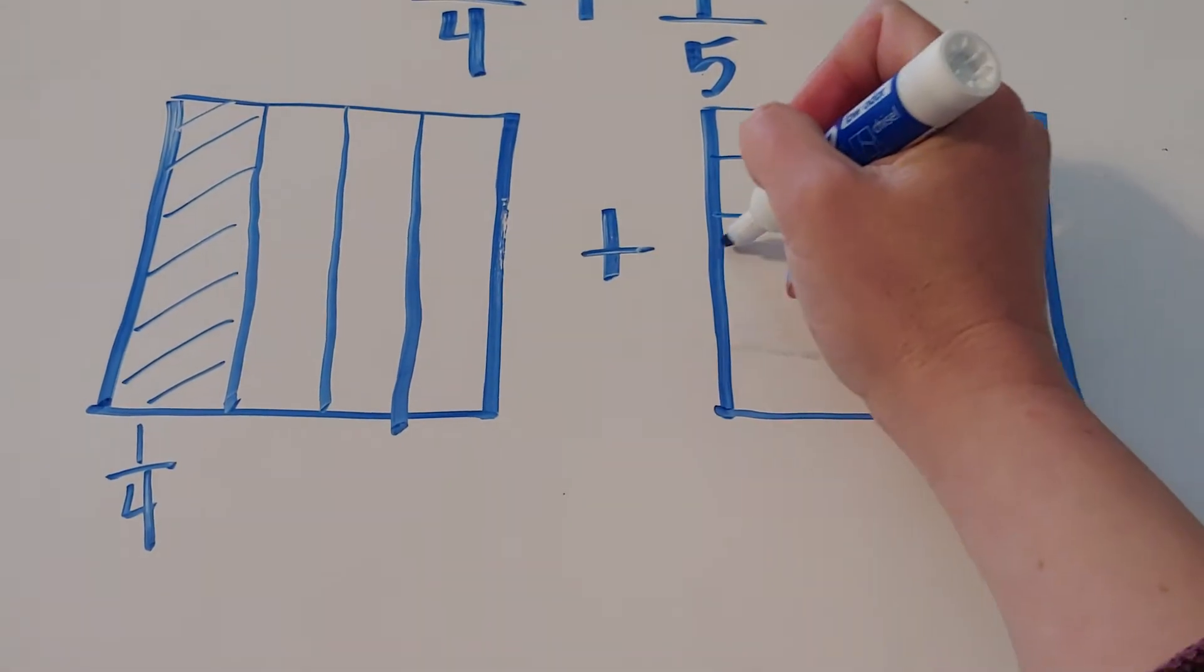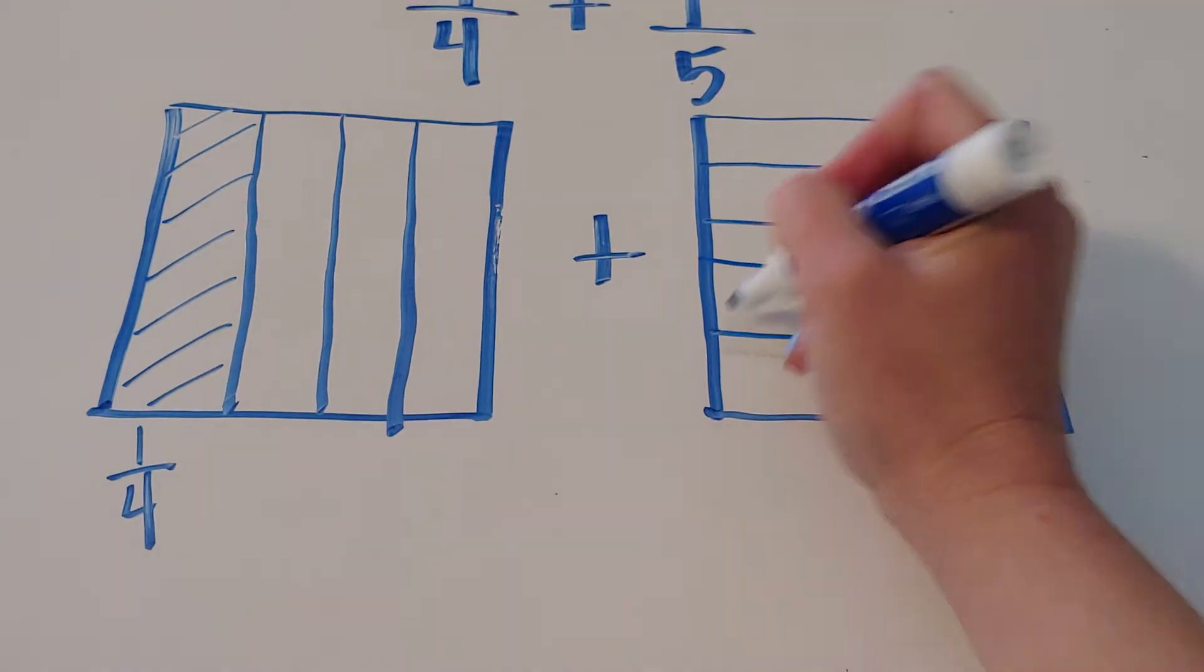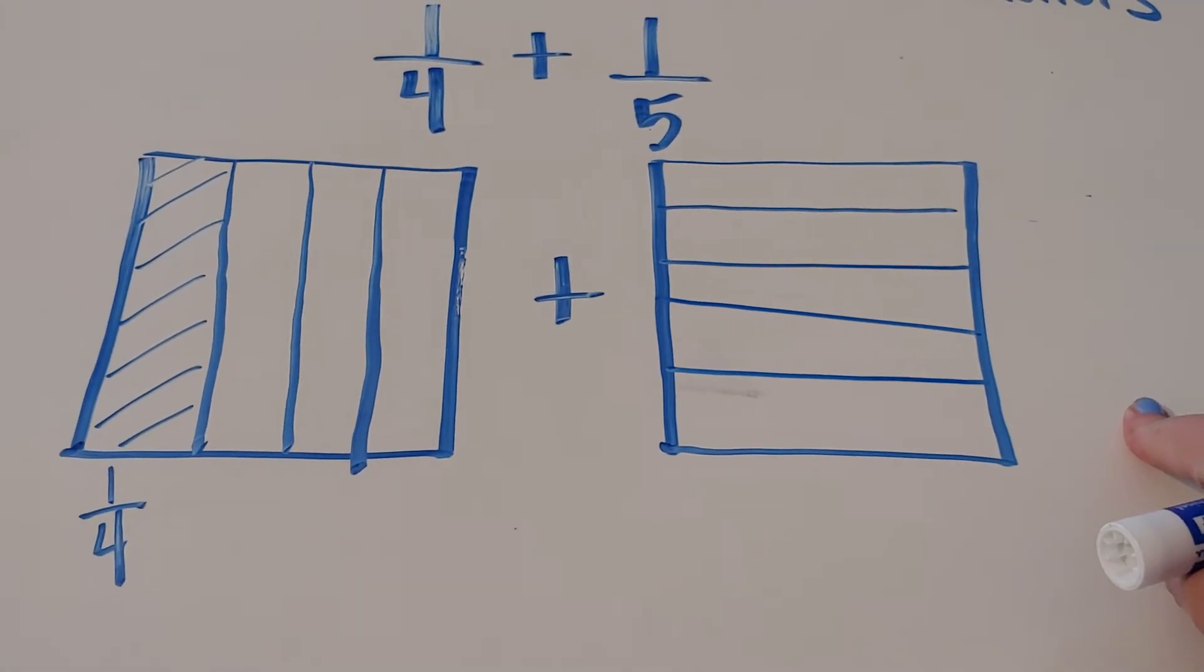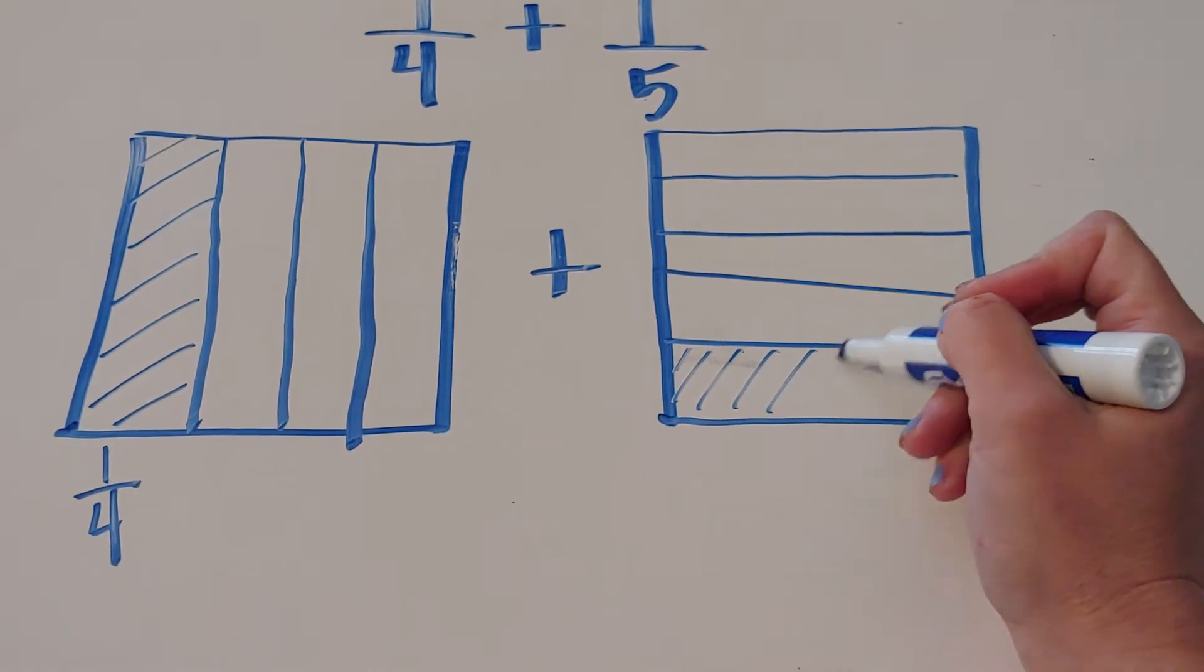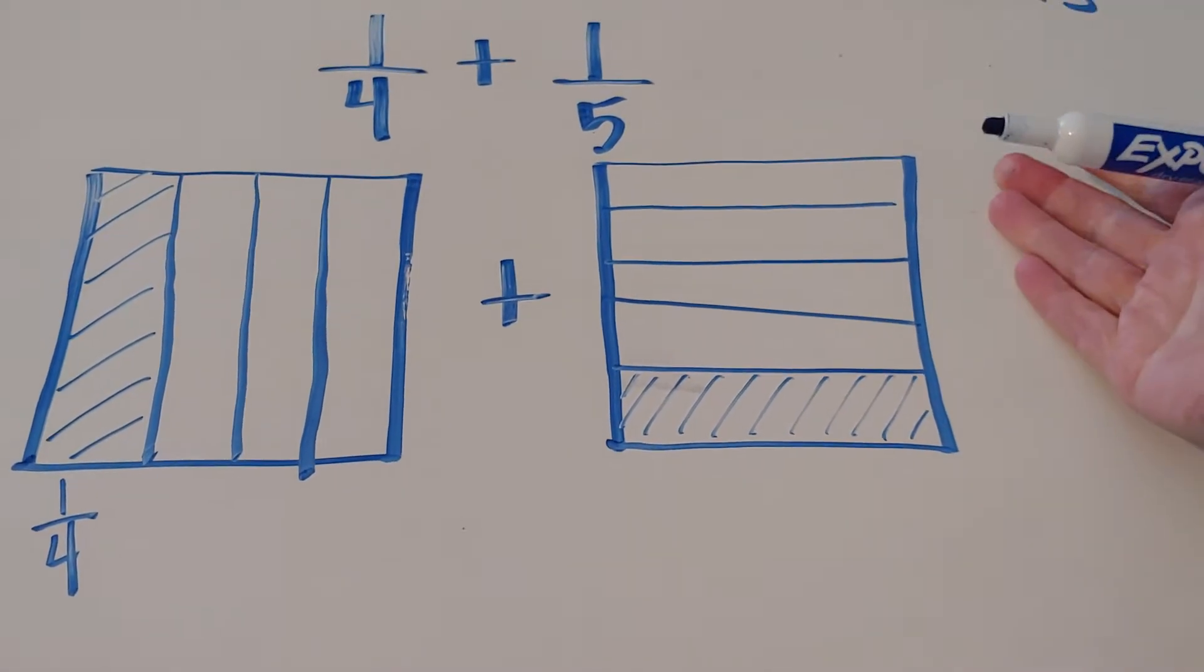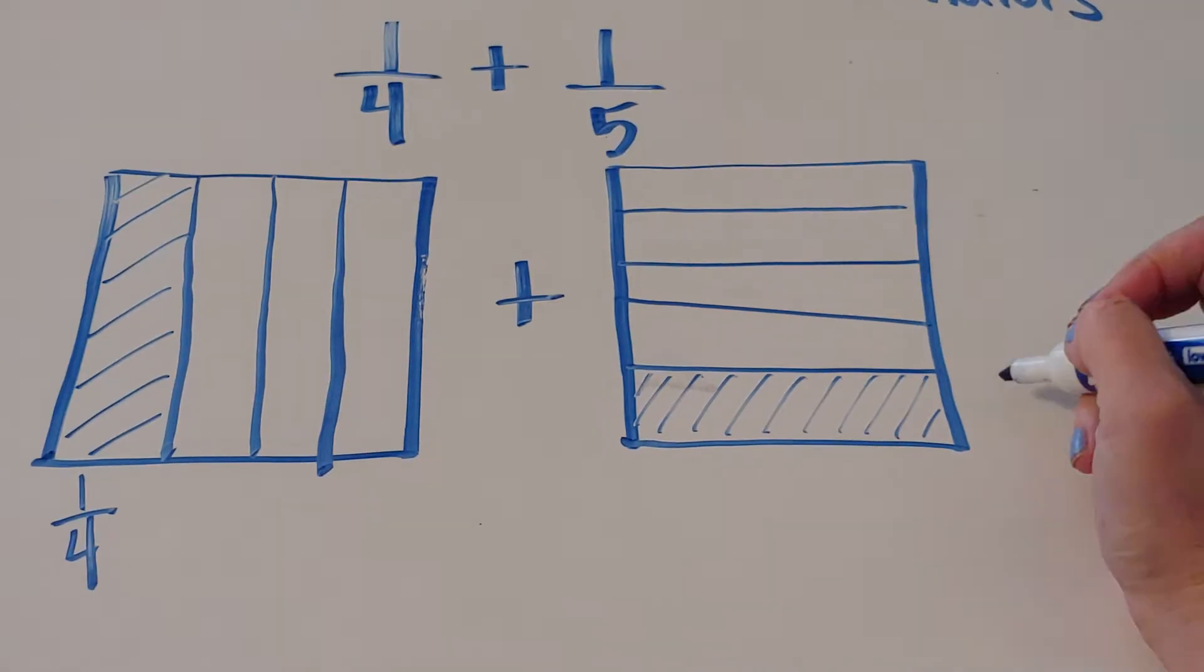So let's see, one, two, three, four, five, and I only want to shade one. Now I don't know why it is, but in the common core books they shade from the bottom, so we're going to do the same. If you want to shade from the top, go ahead, but I'm just trying to be consistent.